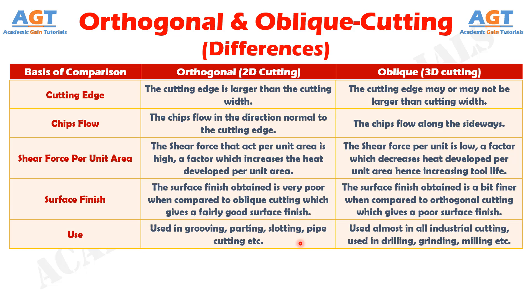If we differentiate them in terms of their use: orthogonal cutting is used in grooving, parting, slotting, pipe cutting, etc. Whereas oblique cutting is used in almost all industrial cutting, including drilling, grinding, milling, etc. So, we have discussed the differences between orthogonal or 2D cutting and oblique or 3D cutting in detail. Thank you.